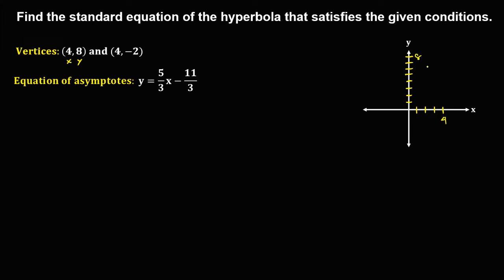This is the coordinate of the first vertex. The other vertex has coordinates x is positive 4 and y is negative 2, so (4, -2). This is the coordinate of the second vertex.